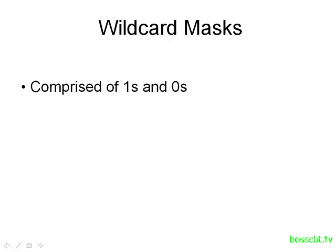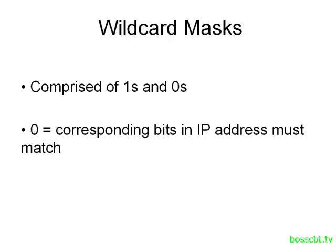Wildcard masks are made up of 1s and 0s. They look a little bit like a subnet mask, but they're very different, so try not to confuse the two. When you see a 0 in a wildcard mask, that means that the corresponding bits in the IP address we're looking at — like the source or destination IP address in a packet — have to match what we have configured in the access list. A 0 means it has to match.